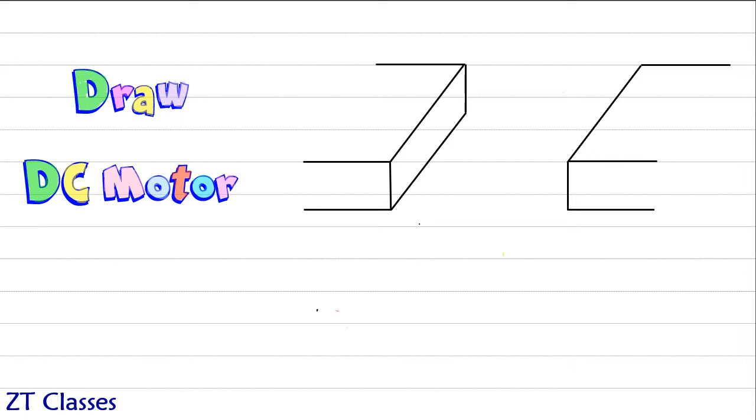Let's draw the axis of rotation first and the armature. Here in the diagram we are showing one armature, but in practical applications there are minimum 3 and up to 8 or 10 armatures depending on how powerful the motor is.